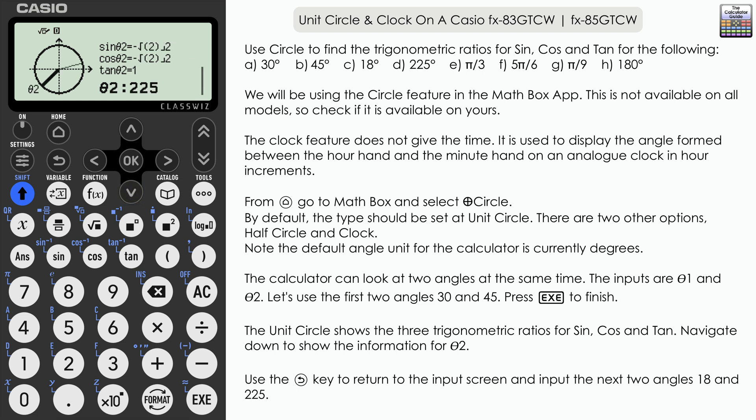With the angle of 18 we have the trigonometric values displayed as decimal approximations as no exact value can be given here. Navigate down to theta 2, you can see that is greater than 180 degrees but we've got exact values there: negative root 2 over 2 for sine and cosine, and tan of 225 is 1.